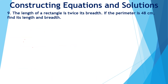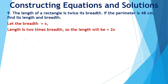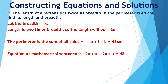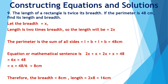The length of a rectangle is twice its breadth. If the perimeter is 48 centimetres, find its length and breadth. Let the breadth be x, so the length will be 2x. The perimeter is the sum of all sides: 2x plus x plus 2x plus x equals 48, giving 6x equal to 48 and x equal to 8. So the breadth is 8 centimetres and the length is 2 times 8, which is 16 centimetres.